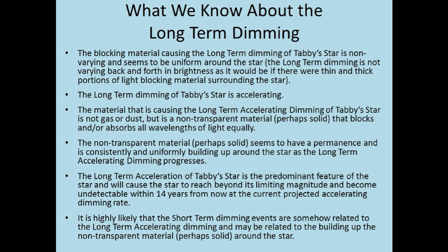The non-transparent material, perhaps solid, seems to have a permanence and is consistently and uniformly building up around the star as the long-term accelerating dimming progresses. The long-term acceleration is the predominant feature of the star and will cause it to reach beyond its limiting magnitude, becoming undetectable within 14 years at the current projected dimming rate. It is highly likely that the short-term dimming events are somehow related to the long-term accelerating dimming and may be related to the buildup of this non-transparent solid material.